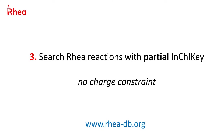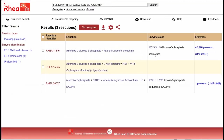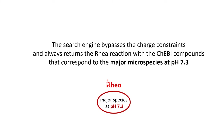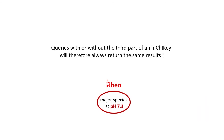We can also query RIA with a partial INCHI key, omitting the second or third block. Information on the charge of our molecule is encoded in the third block of the INCHI key. If we query with the third part omitted, we get the same three reactions as before. The reason is that the RIA search engine bypasses the charge constraints and always returns the RIA reaction with the KEBI compounds that correspond to the major microspecies at pH 7.3.